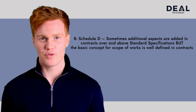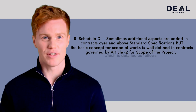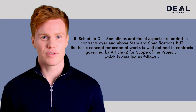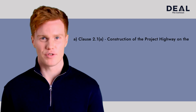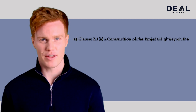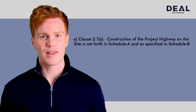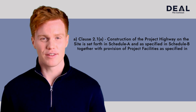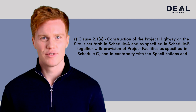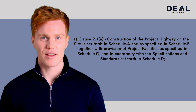The basic concept for scope of works is well defined in contracts governed by Article 2 for scope of the project, detailed as follows: Clause 2.1(a) — construction of the project highway on the site as set forth in Schedule A, specified in Schedule B, together with the provision of project facilities as specified in Schedule C, and in conformity with the specifications and standards set forth in Schedule D.